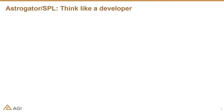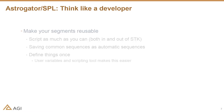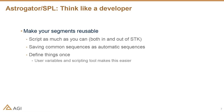As a software developer at times using Astrogator, it made me wonder how the skills of being a software developer transfer over. One key component of being a good developer is making your code reusable. Similarly, you want to make your segments reusable, script as much as you can both in and out of SDK, save common sequences as other sequences, and define things once and only once — so you're not scrambling through all your segments when you need to change a desired longitude or other constraints.